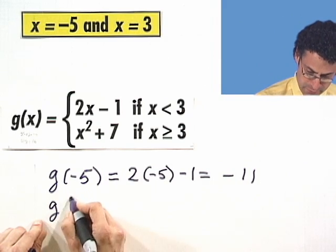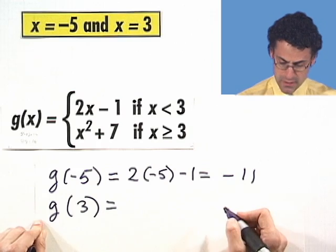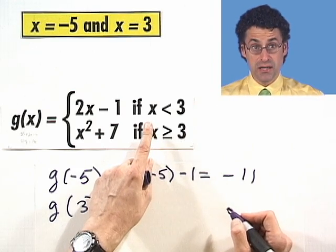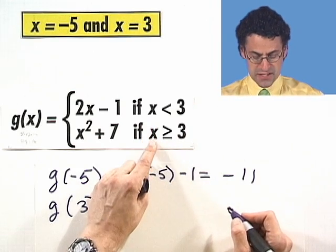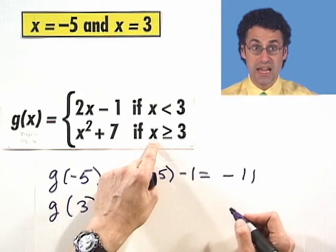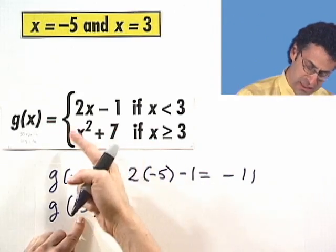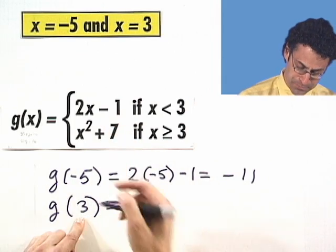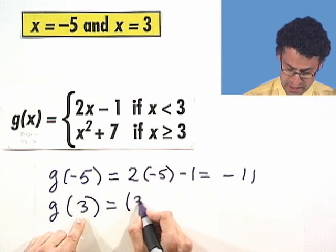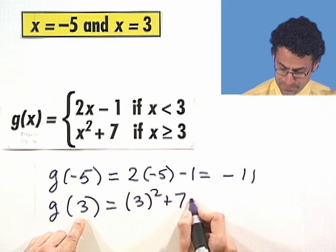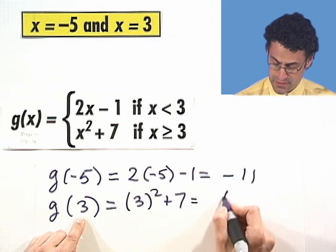What about g evaluated at 3? Is 3 less than 3? No. Is 3 greater than or equal to 3? Absolutely. So now for x equals 3, we're in this particular case of the function. And so now the function is going to be 3 squared plus 7, which is going to be 9 plus 7 or 16.